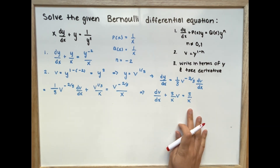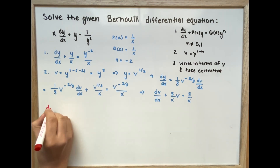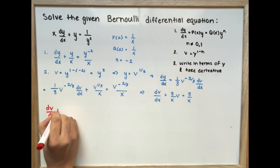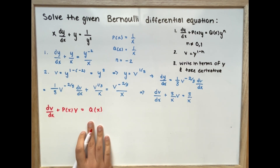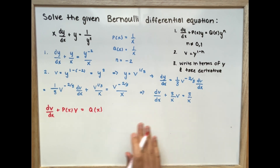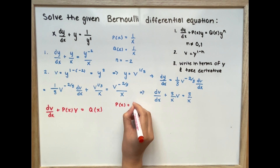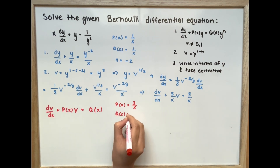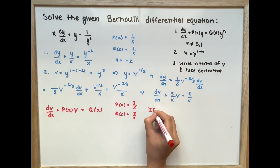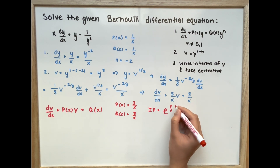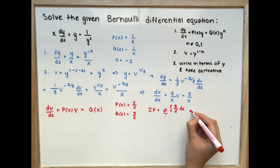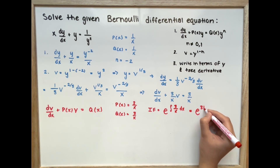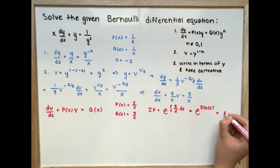Looking at this equation carefully, it is written in the format dv over dx plus P(x) times v equals Q(x), so this is just a linear first-order differential equation. We can use an integrating factor. Setting P(x) equal to 3 over x, the integrating factor is e to the power of the integral of 3 over x dx, which equals e to the power of 3 ln|x|, or x to the power of 3.